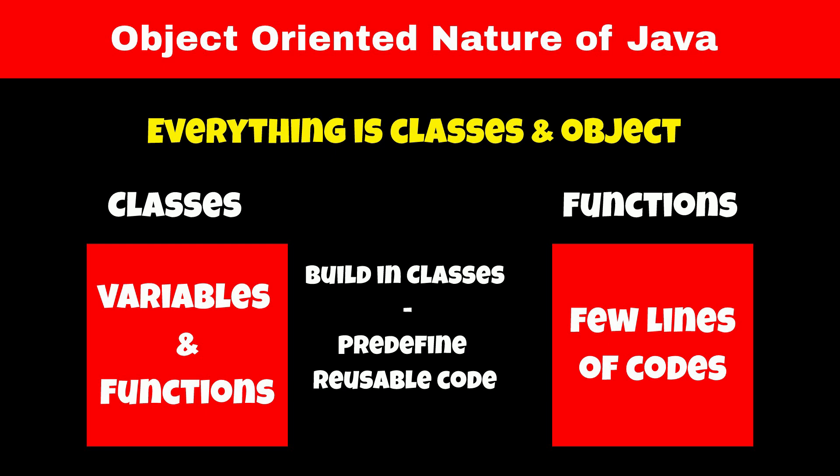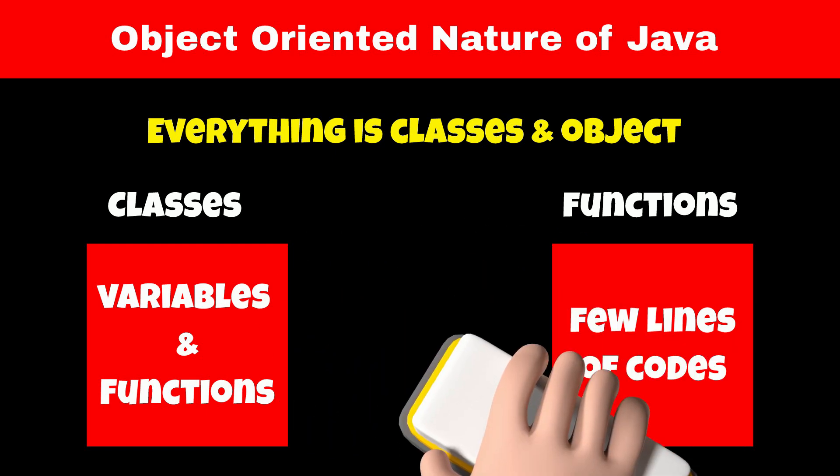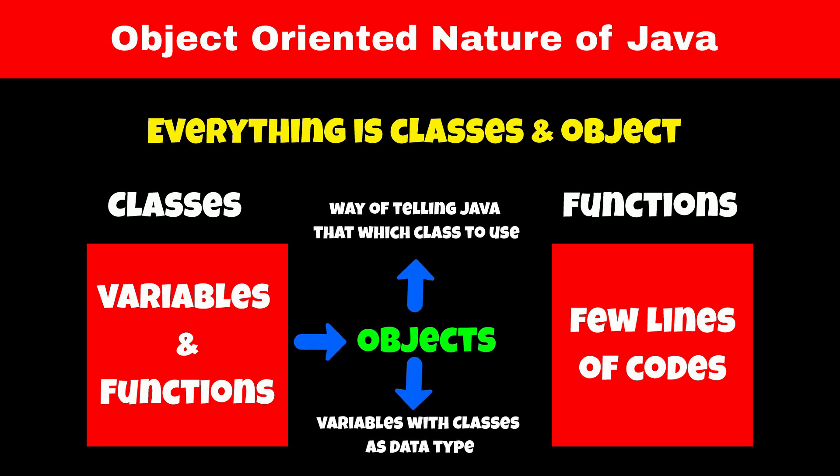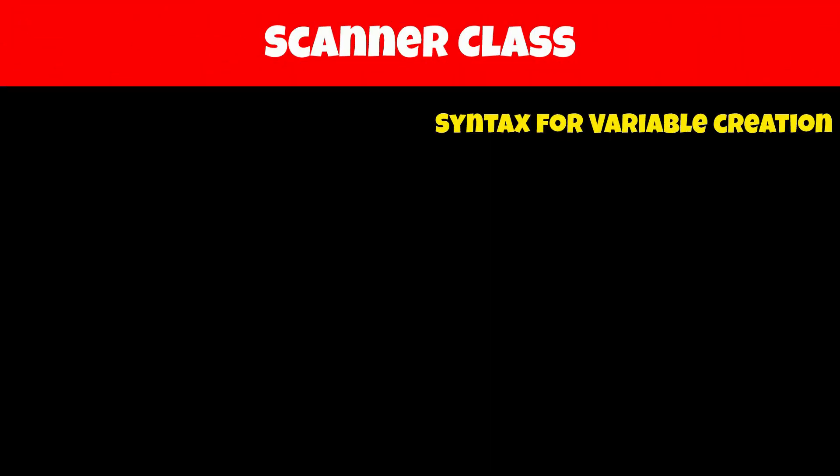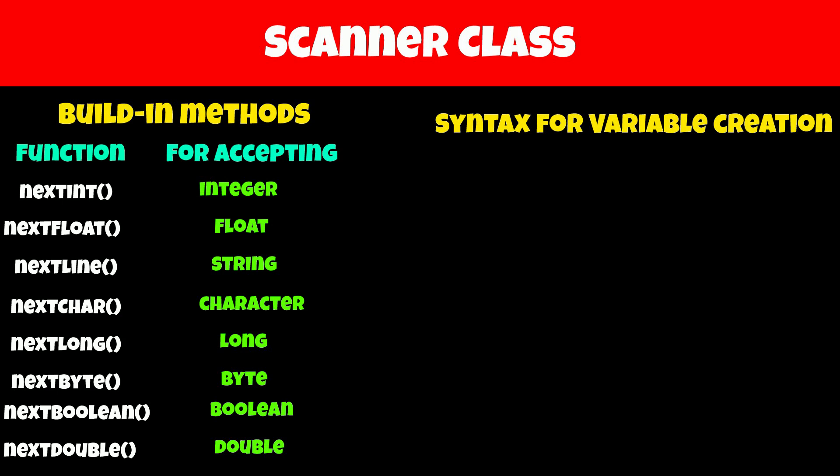So how do we use these classes and functions in our program? To use these classes, we have to create an object of the class. Consider an object as our way to tell Java that we want to use their classes. For taking input, Java provides us with the Scanner class, which has predefined methods to help us take input.